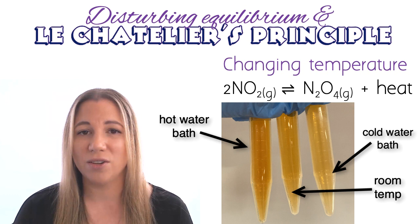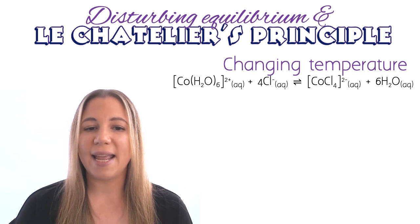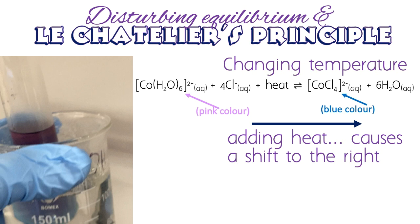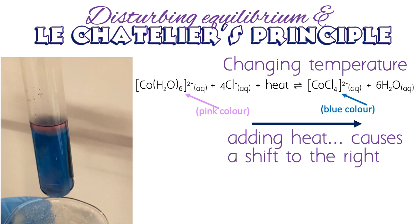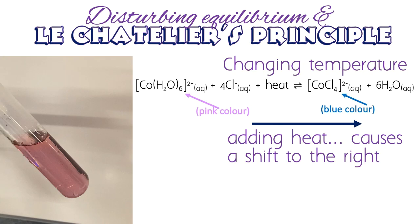Here's another example using the reaction between cobalt chloride and hydrochloric acid. This reaction is endothermic in the forward direction. If we put this system in a hot water bath to increase its temperature, the system shifts to the right to try and use up the heat, and we would expect to see the colour turn blue. If we put the system in a cold water bath, the system shifts to the left to try and gain more heat, turning it pink.